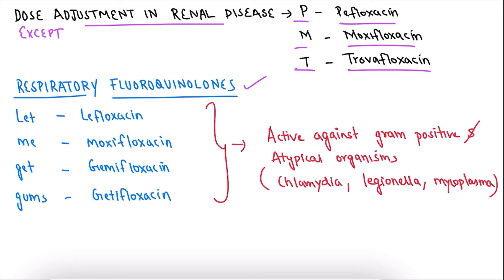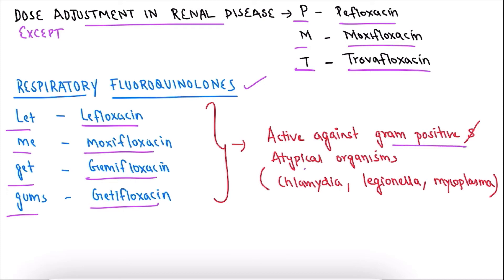For respiratory fluoroquinolones, we can remember them using the mnemonic 'Let Me Get Gums': L for levofloxacin, Me for moxifloxacin, Get for gemifloxacin, and Gums for gatifloxacin. These respiratory fluoroquinolones are active against gram-positive organisms and atypical organisms like Chlamydia, Legionella, and Mycoplasma.